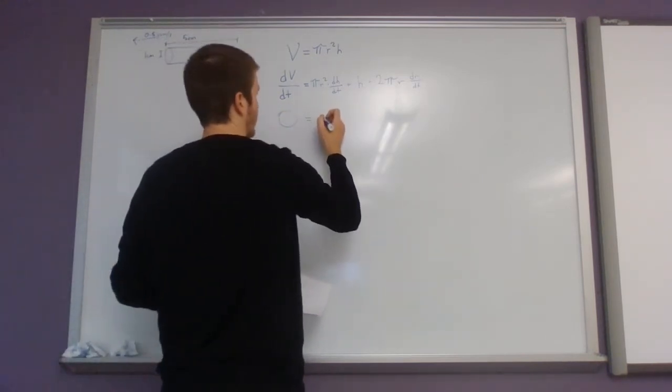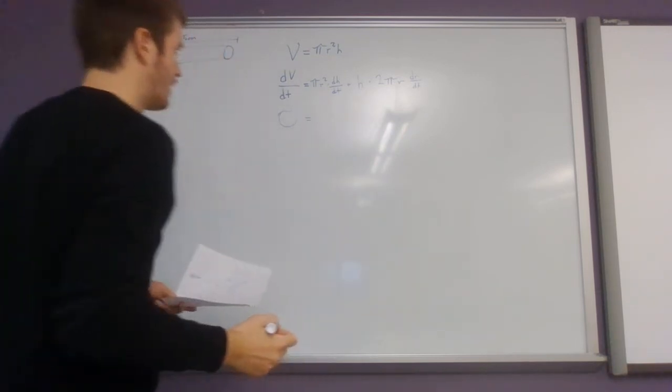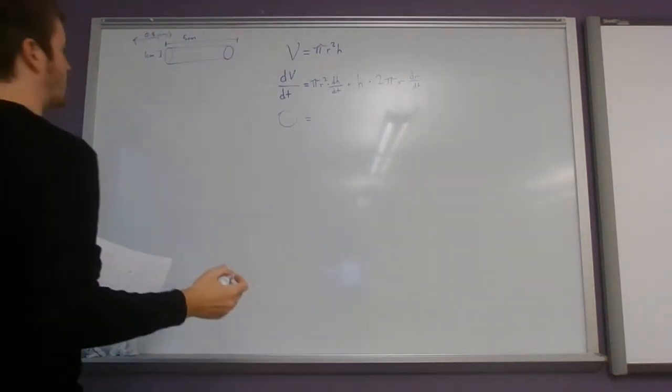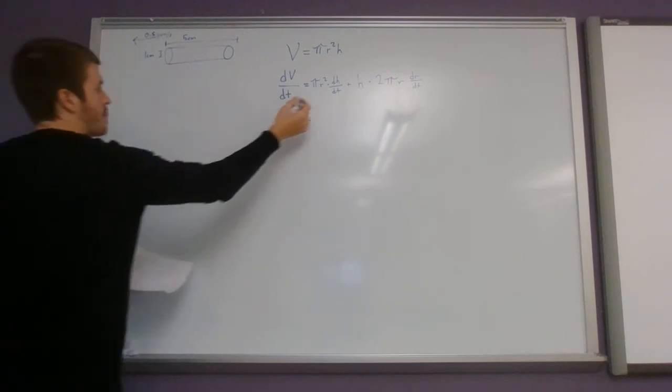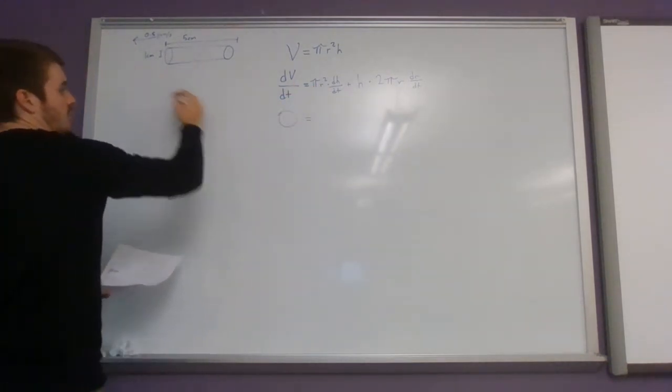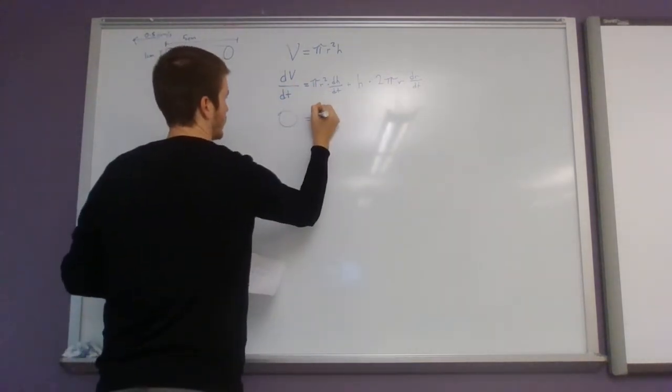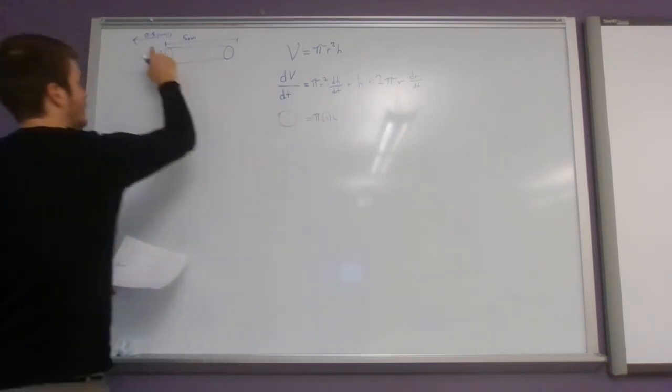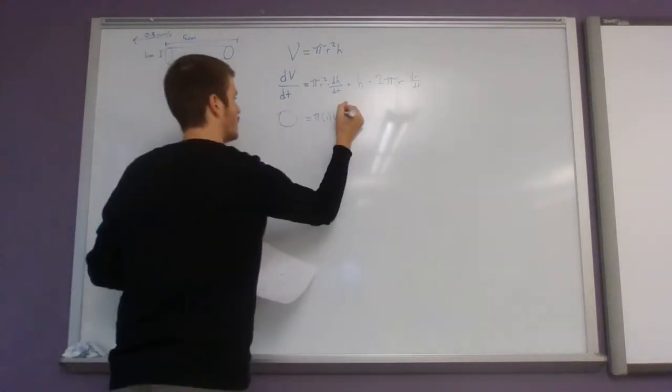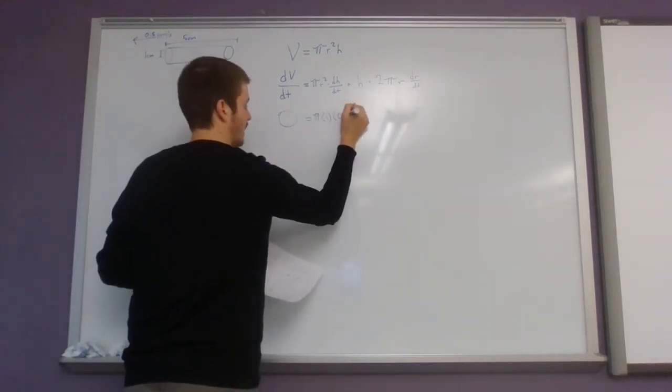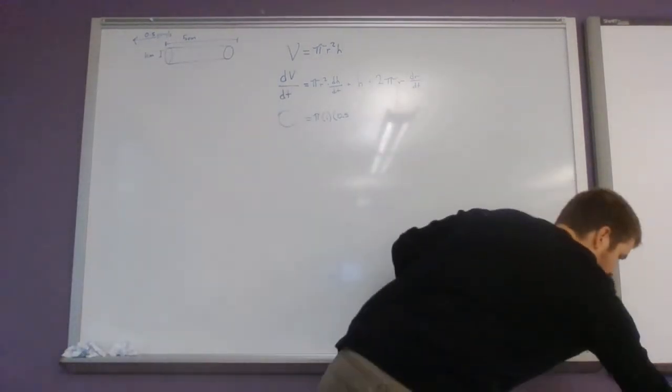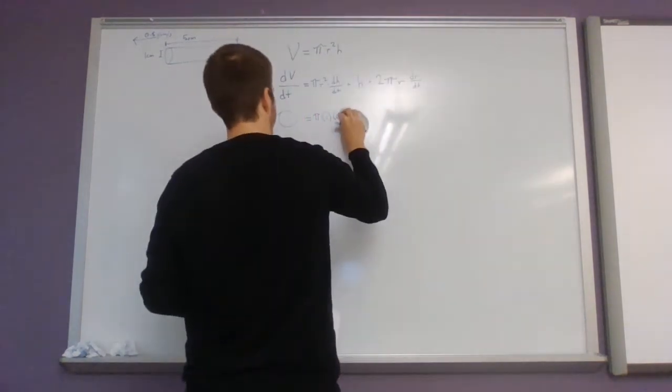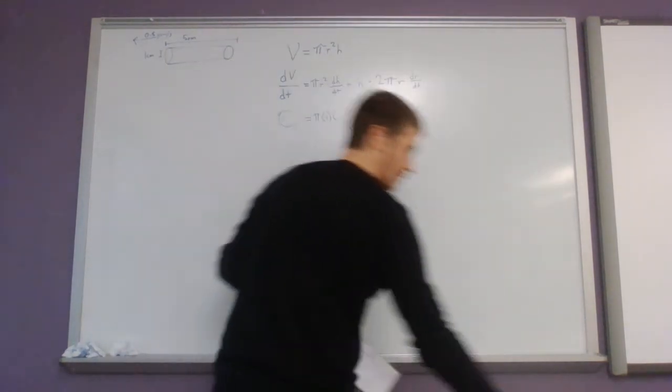Okay, I'm gonna go ahead and fill in now what we know. All right, our radius is of course just one. We're gonna go ahead and fill in now the dh dt is 0.5. And I'm gonna write this as one-half, just prefer fractions.